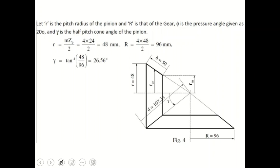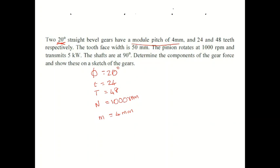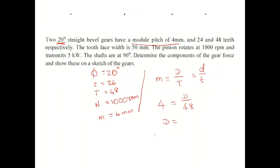To find the radius, we use the formula: radius = module × number of teeth divided by 2. The module formula is m = D/T (diameter to teeth ratio). Module value is 4. So 4 = capital D divided by capital T, where capital T is 48. Therefore, capital D = 4 × 48 = 192 mm.